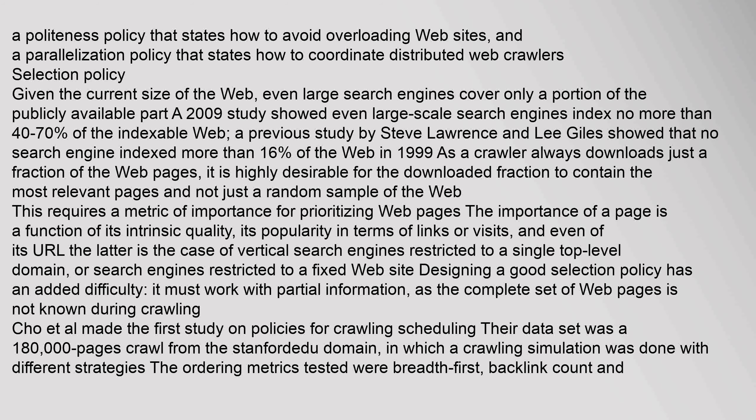Given the current size of the web, even large search engines cover only a portion of the publicly available part. A 2009 study showed large-scale search engines index no more than 40 to 70 percent of the indexable web. A previous study by Steve Lawrence and Lee Giles showed that no search engine indexed more than 16 percent of the web in 1999. As a crawler always downloads just a fraction of web pages, it is highly desirable for the downloaded fraction to contain the most relevant pages and not just a random sample. This requires a metric of importance for prioritizing web pages. The importance of a page is a function of its intrinsic quality, its popularity in terms of links or visits, and even of its URL.